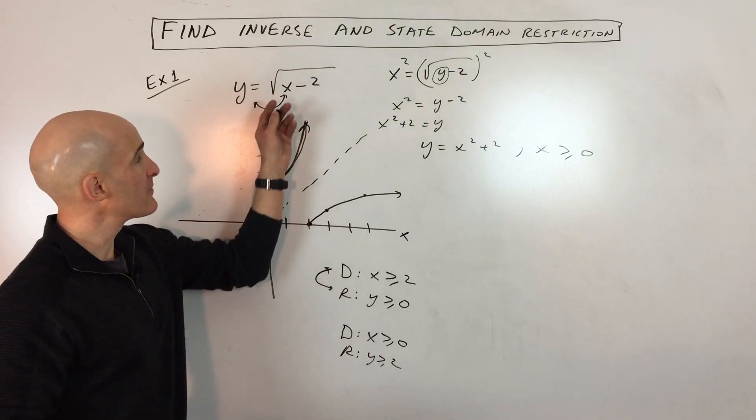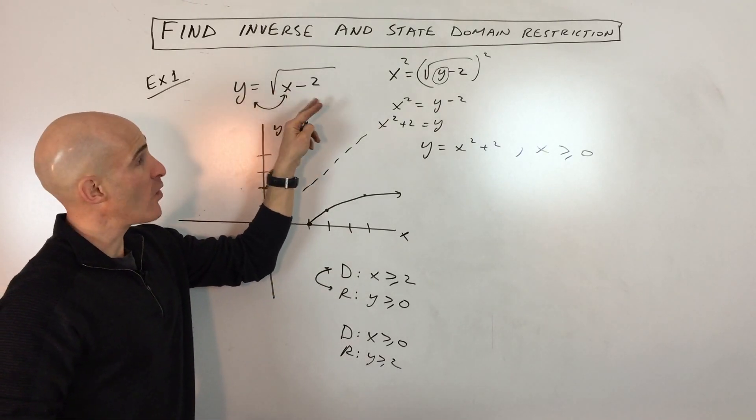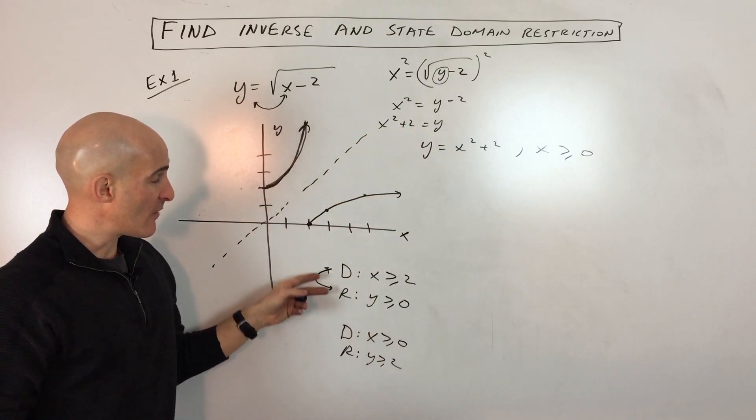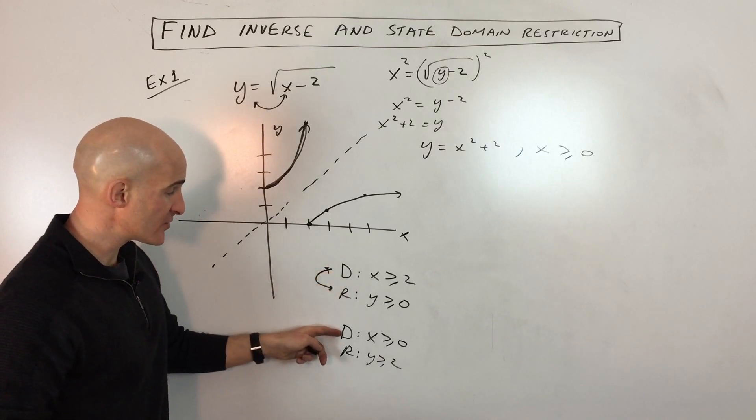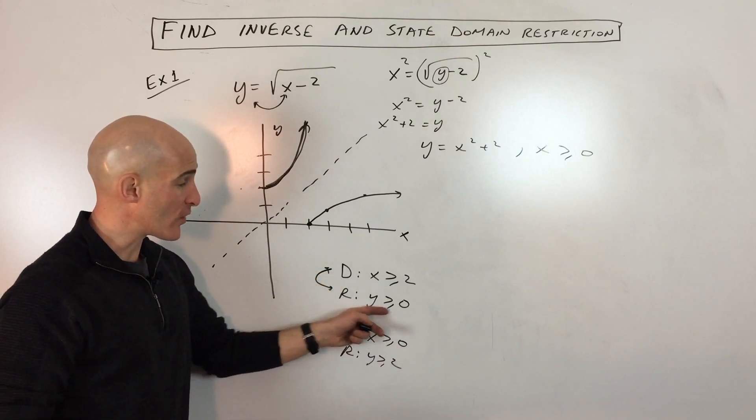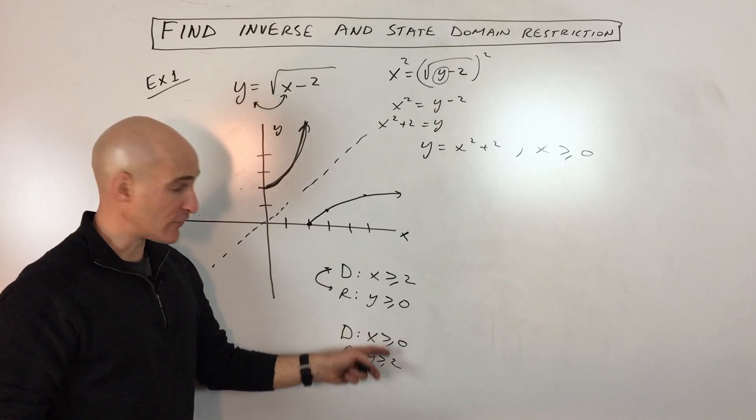So that's an important way to do this, finding the inverse. You switch the x and the y, solve for the new y. But then you have to keep in mind, look at the domain and the range of the original function, switch those. The domain of the inverse function is what the range used to be of the original function.